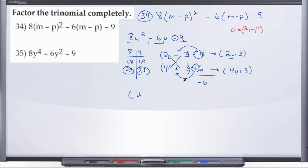And so what we're going to have is 2, and now replacing u with m minus p minus 3. And our second factor was 4u plus 3, but now we're going to replace the u with our m minus p plus 3.